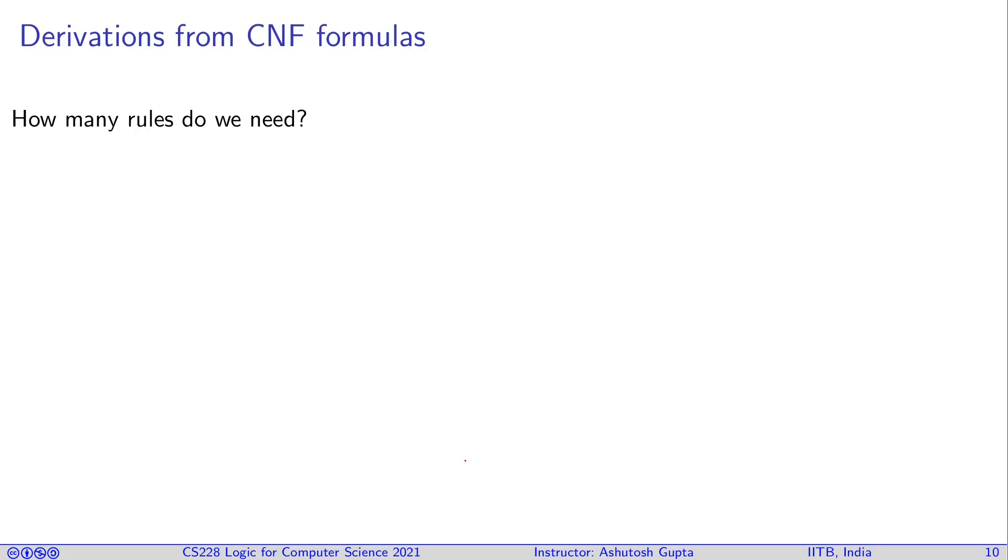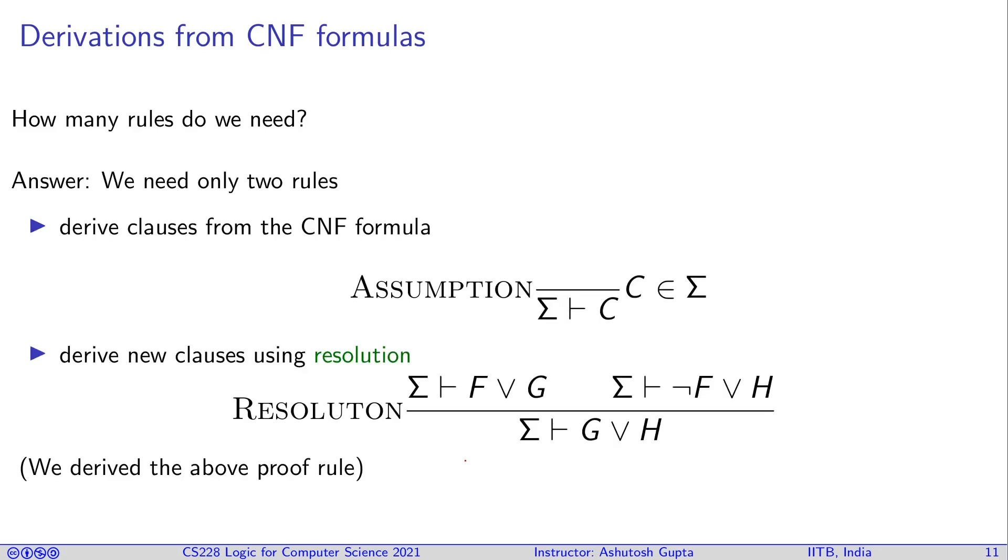Remember the derivations. Let's suppose we are starting from CNF formulas, not arbitrary formulas. So how many rules do we need? The answer is, we only need two rules.